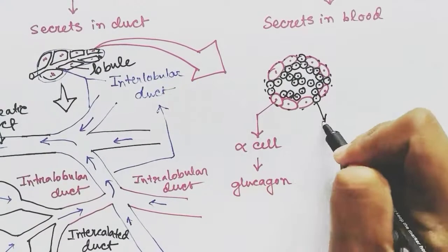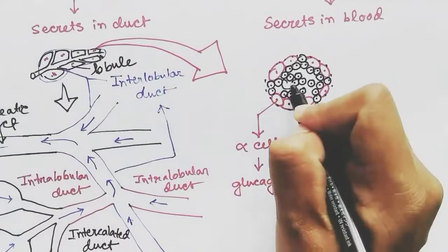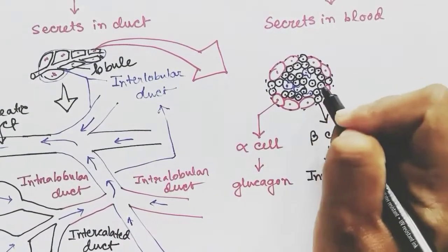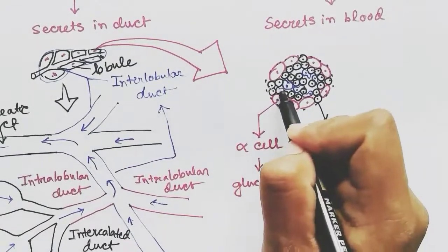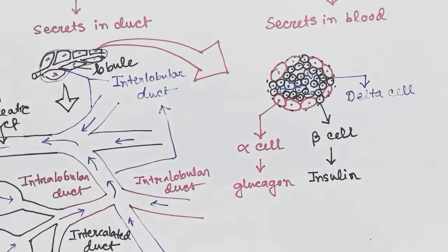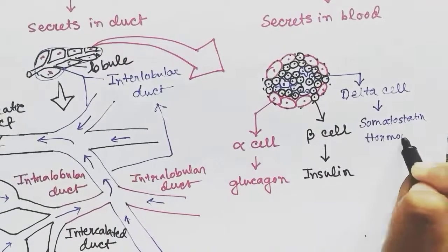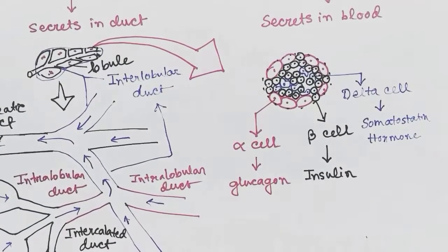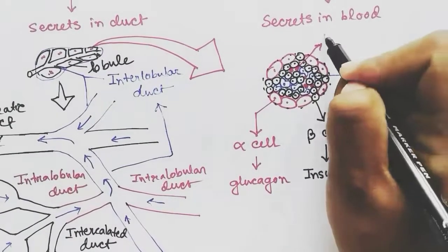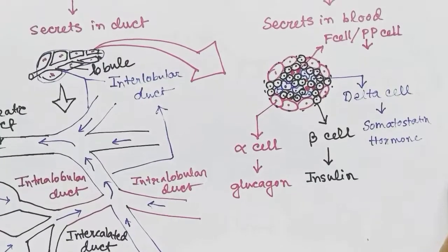Another kind of cell is the delta cell, which constitutes 5 percent of the islet and releases somatostatin. Another kind of cell is the F cell or PP cell, which also constitutes about 5 percent of the islet and releases pancreatic polypeptide.